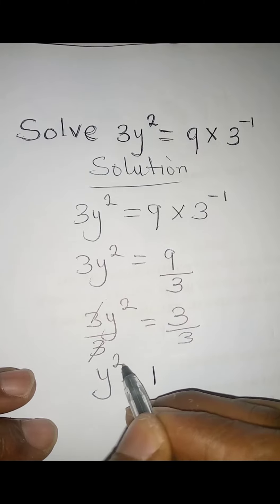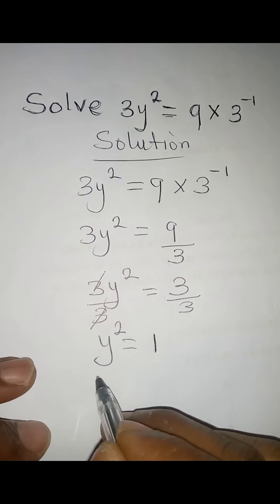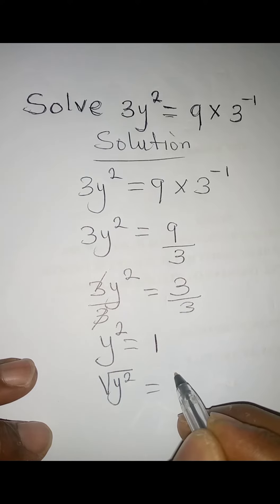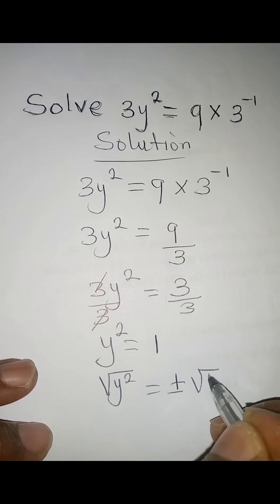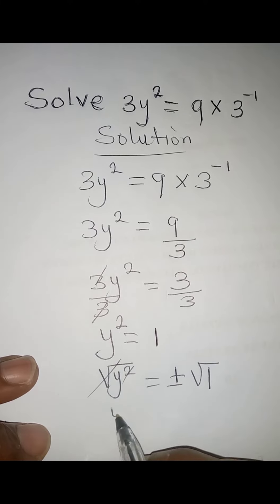The next thing to do is take the square root of both sides, so √(y²) = ±√1. The square root and the square cancel, so y equals positive or negative 1.